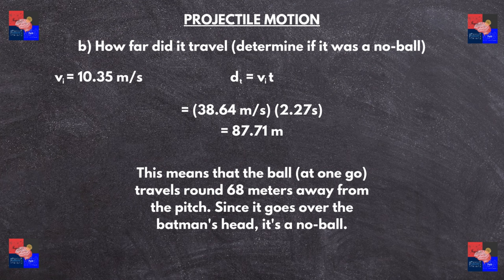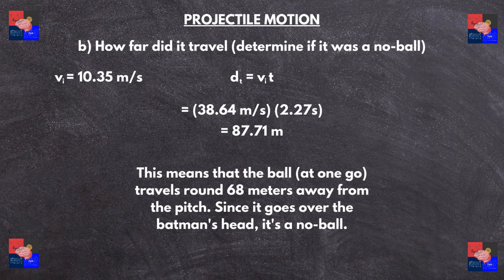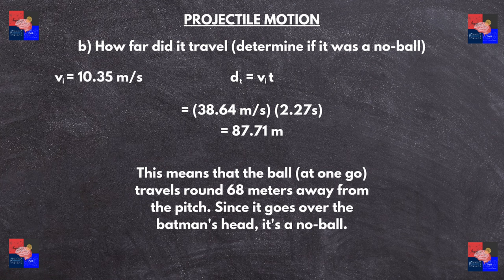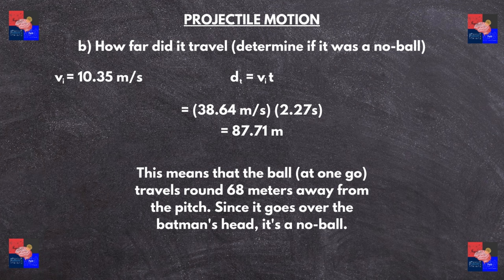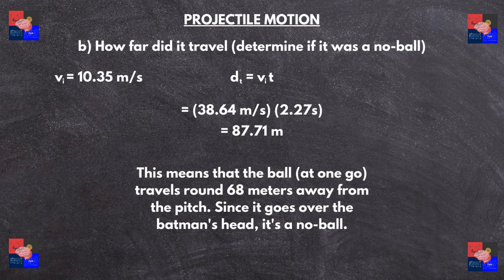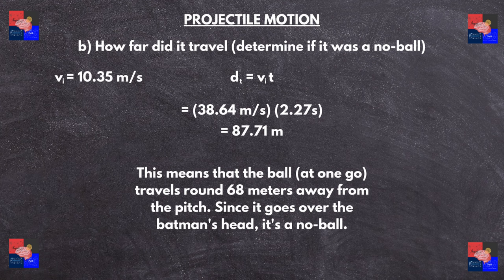For the second one, we use the same equation except one half acceleration times time can be ignored since the ball isn't accelerating in the x direction, and we get a total of 87.71 meters. This is actually very interesting because the ball is moving very far, far from how long the pitch is. And if the batsman doesn't hit the ball, then it will be a wide ball. And that's why you don't throw the ball upwards.